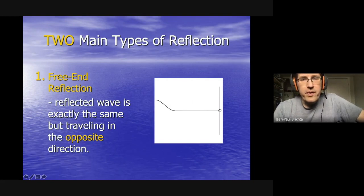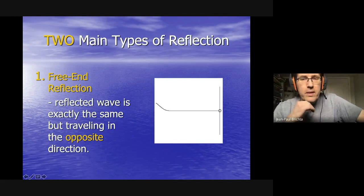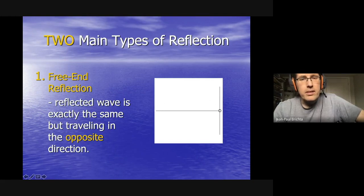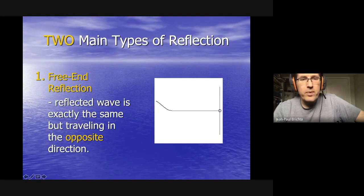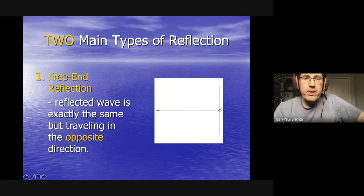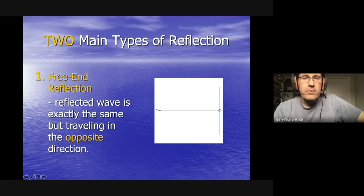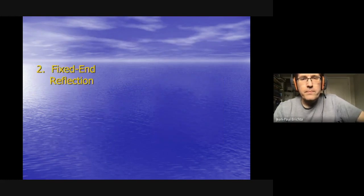This is called a free end — the ring is not tied down and is allowed to move however it wants along the pole. When the wave is incident and the ring goes up, the wave reflects on the same side. So it started on top and reflects on top as well — the reflected wave is exactly the same, just traveling in the opposite direction.